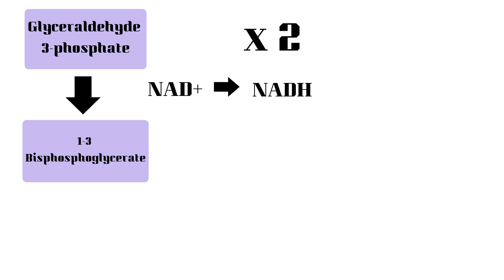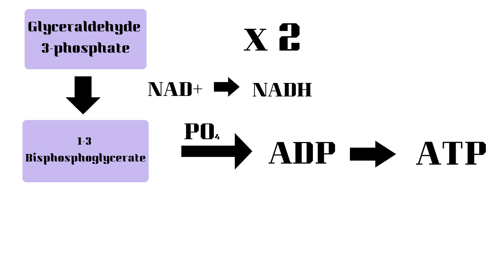The 1,3-bisphosphoglycerate then transfers one of its phosphate groups to ADP, making ATP. Remember that because this reaction is happening twice, two ATPs are produced. The loss of this phosphate group transforms the 1,3-bisphosphoglycerate into 3-phosphoglycerate. This reaction uses the enzyme phosphoglycerate kinase.